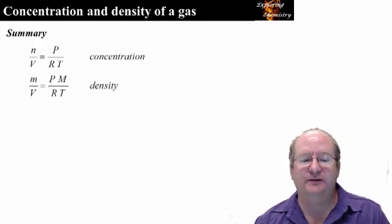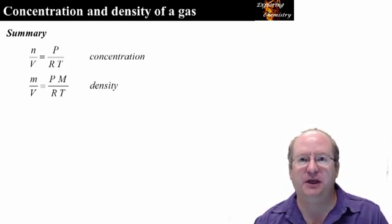What you should have derived is presented here. The concentration of a gas is given by P over RT. The density of a gas is given by PM over RT. It is interesting to note that the density of a gas is proportional to the molecular mass of that gas.